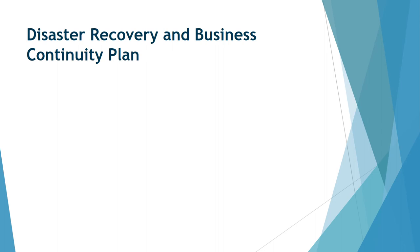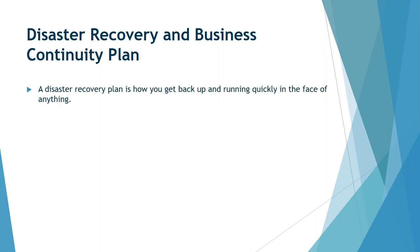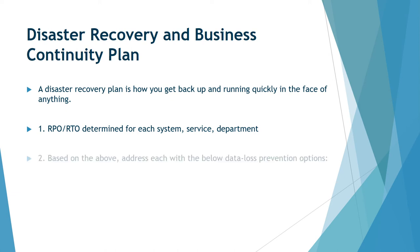The disaster recovery and business continuity actual plan is how you get back up and running. We have the plan in place so we're not twiddling our thumbs — because we've built a plan. There's going to be a leader, whether it's the company owner, a manager, or your IT provider. There has to be a plan in place and then everybody knows what to do when something happens. You determine an RPO and RTO for each system, service, and department — accounting, finance, logistics, management. And based on the above, you make a hierarchy and address each with the appropriate data loss prevention measures.